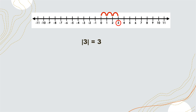How about the absolute value of negative 3? We start at negative 3 and move: 1, 2, 3. Therefore, we have 3 units. So the answer is positive 3. For these first two examples, we used the number line. But we can also get the absolute value without using a number line.